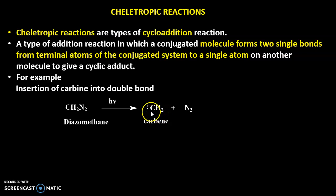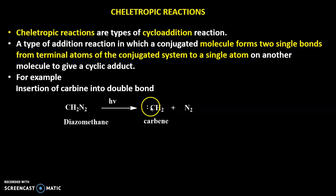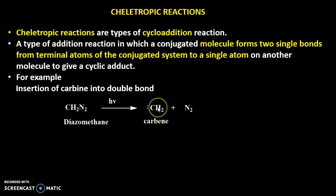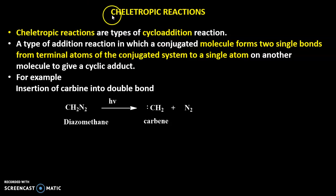Remember, a normal carbon atom is generally attached to four atoms, but in carbene, carbon is attached to only two atoms and it has a lone pair of electrons. Such a species is called carbene. When this carbene is treated with a double-bond-containing system, which we call a conjugated system, then that reaction is called a chelotropic reaction.